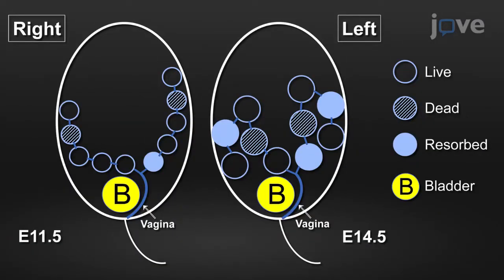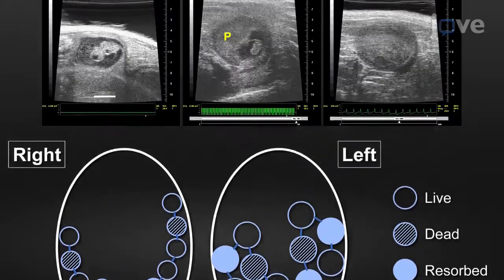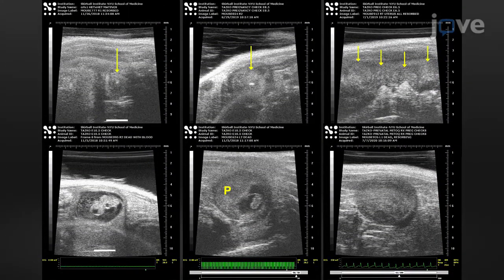This protocol is especially useful when breeding genetically engineered mice. Typically, heterozygous with heterozygous crosses to yield homozygous offspring lead to failure of proper development, causing prenatal lethality.